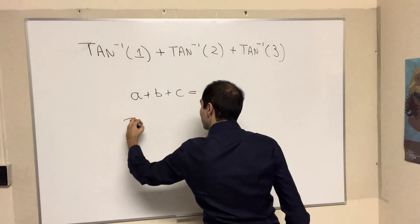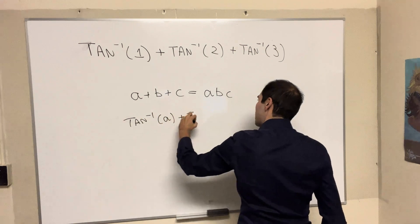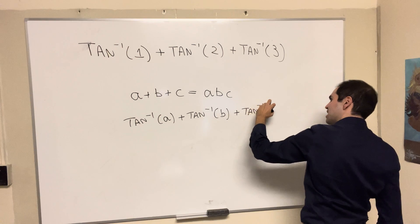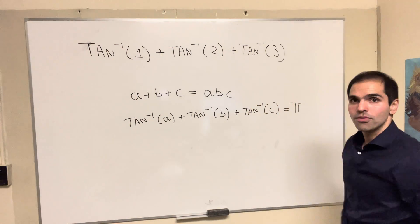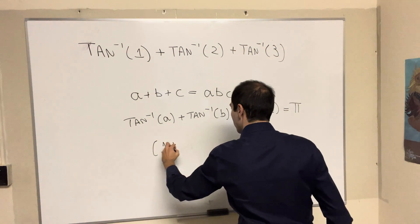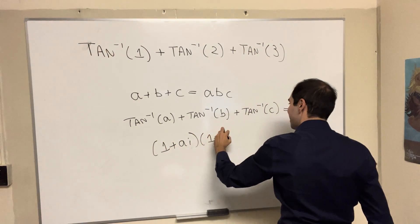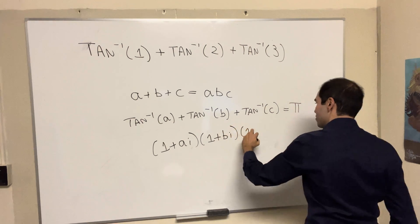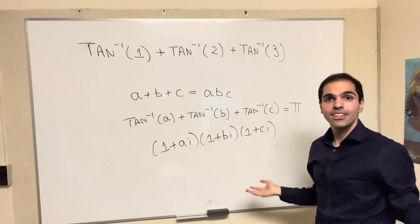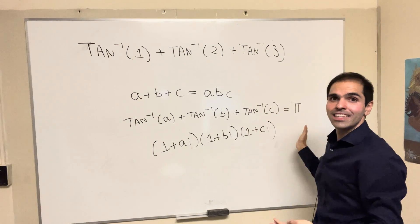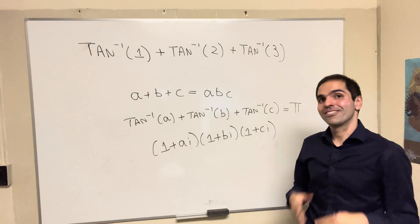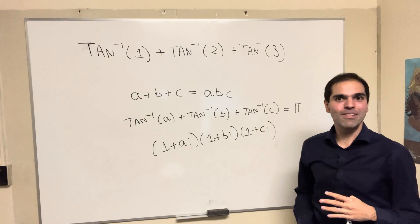then it is still true that arctangent of a plus arctangent of b plus arctangent of c is π. And it's the same thing if you just consider the expression (1+ai)(1+bi)(1+ci). If this holds, then we get a real expression. You take arguments. On the right-hand side is π. On the left-hand side is the sum of arctangents. How cool is that? That's right. You got to show complex numbers some respect.